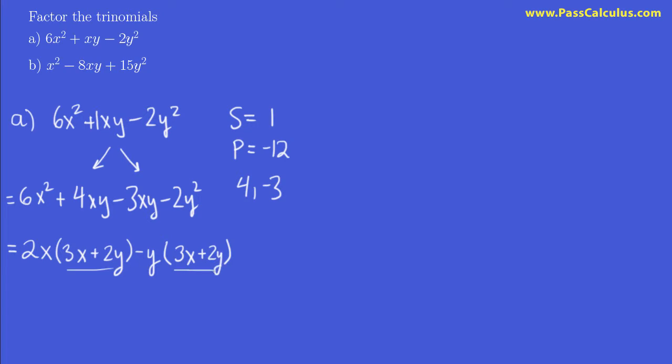And now notice that since we have the same quantity, 3x plus 2y, in both of these brackets, that's a sign that everything is going good. And we can pull that to the front now. So 3x plus 2y is my common factor now. And what do I have left in brackets? That's 2x minus y. And that's our factored trinomial, we're done.